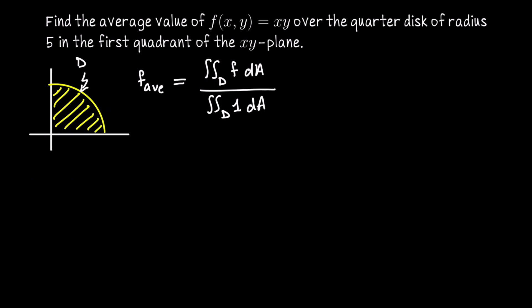We're going to set this up in polar coordinates. So we'll have x equals r cosine theta, y equals r sine theta. The bounds on the radial coordinate go from 0 at the origin out to 5, and the bounds on theta go from 0 to pi over 2 because we're just in the first quadrant.